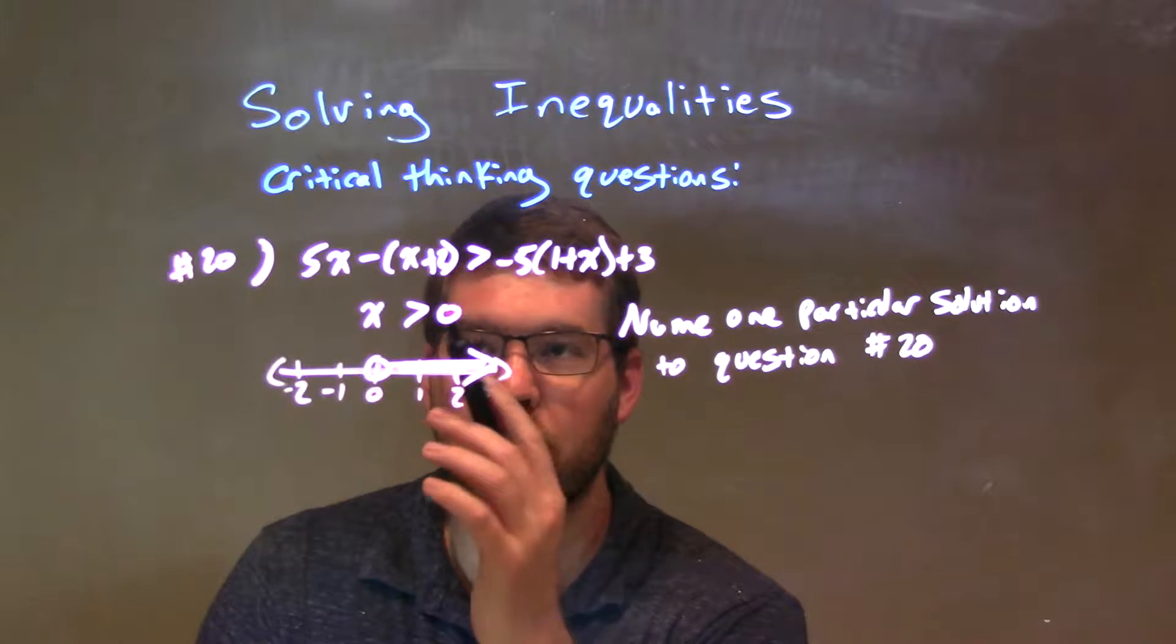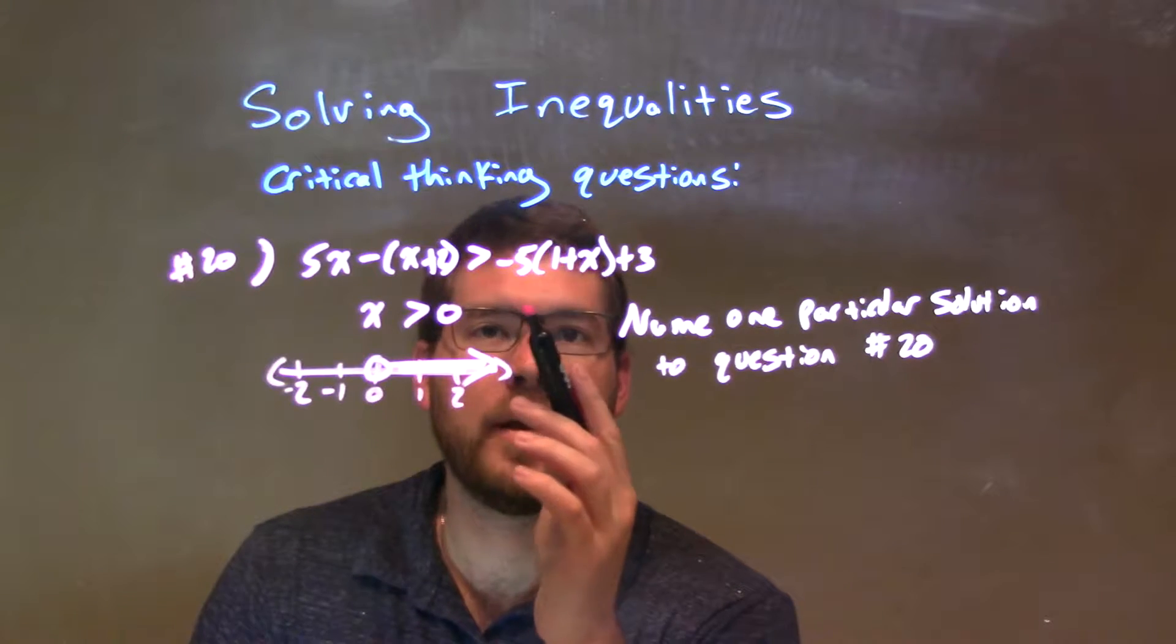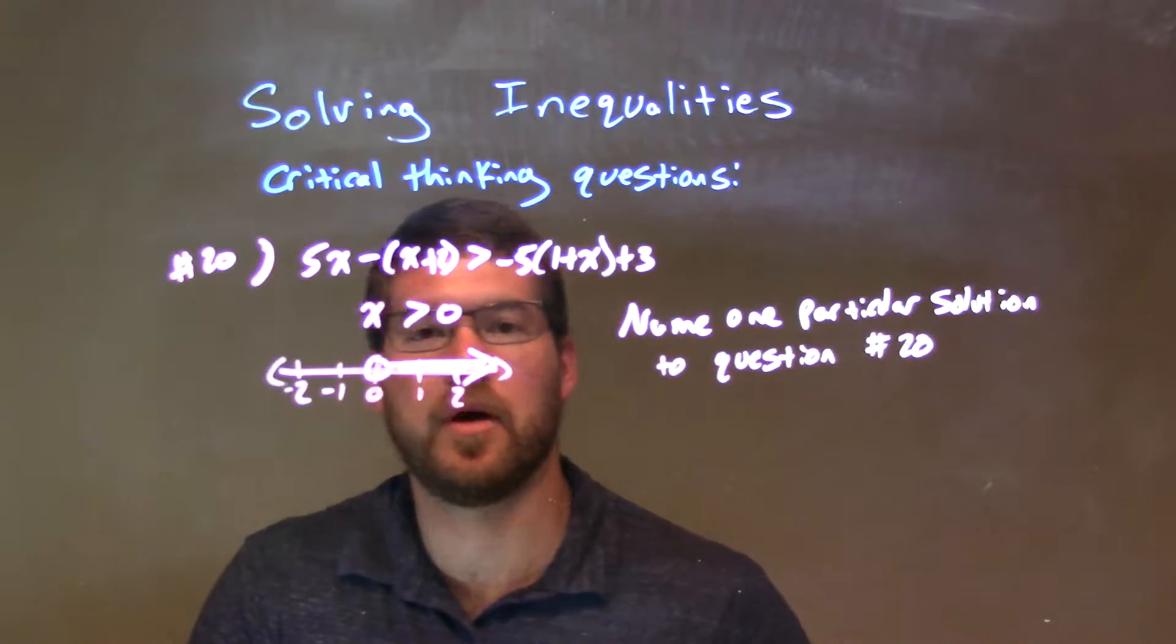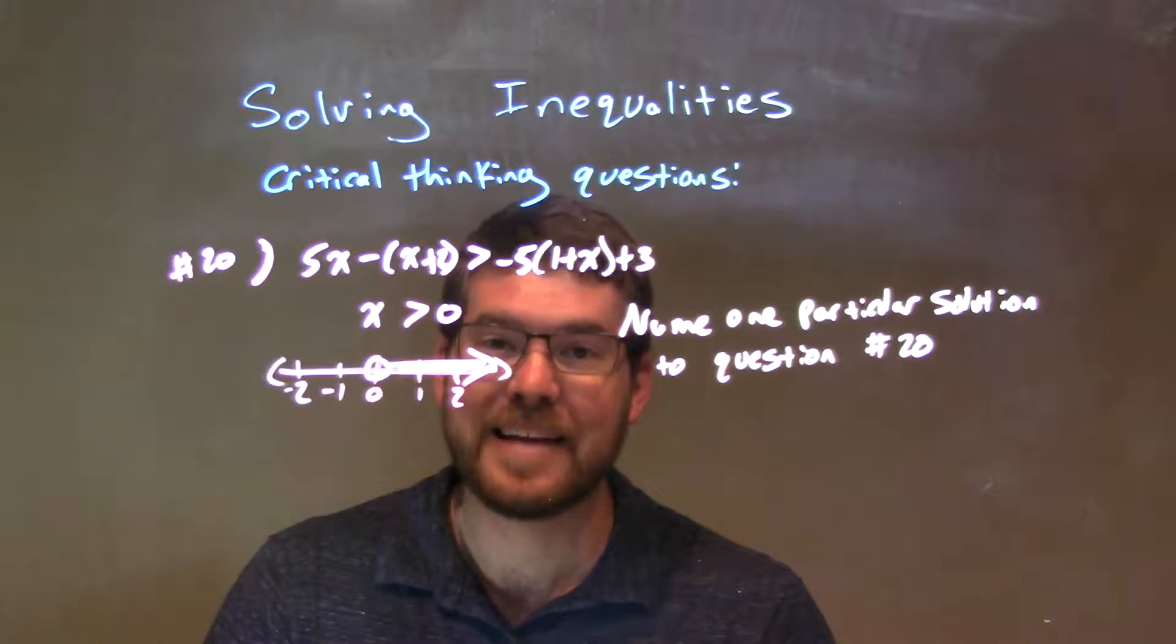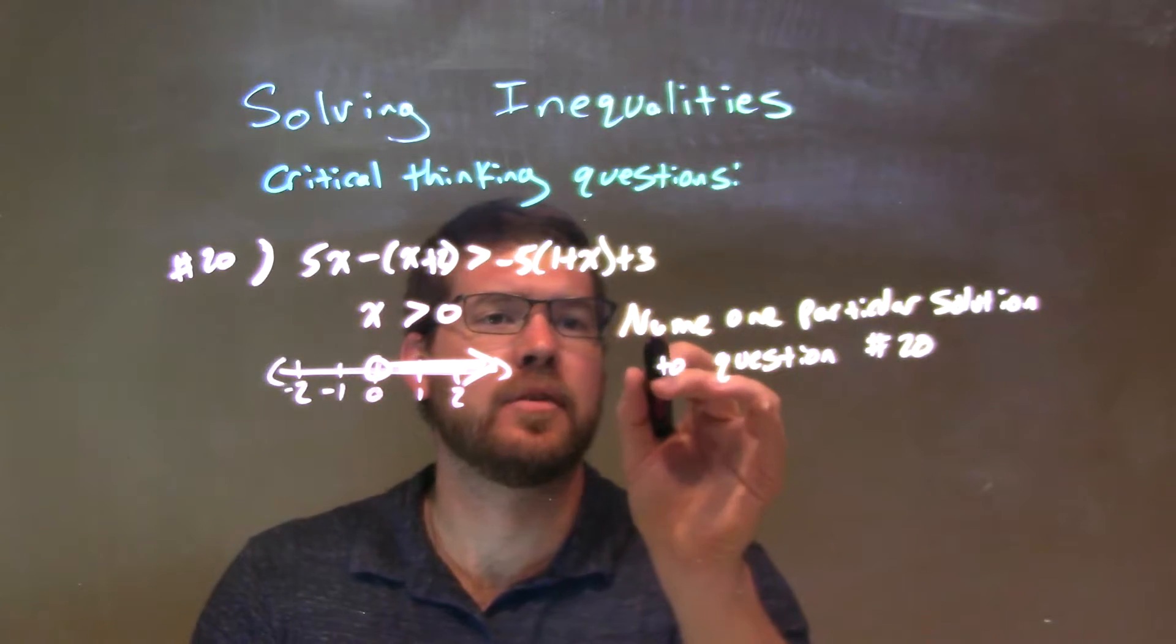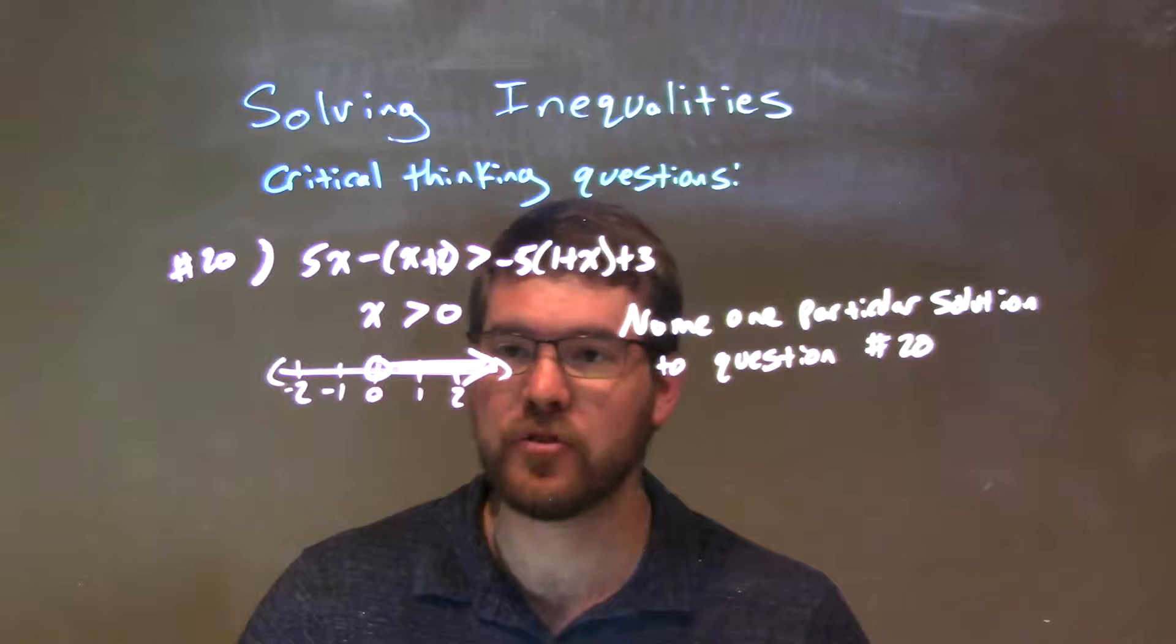5x minus x plus 2 is greater than negative 5 times 1 plus x plus 3. That solution is x is greater than 0, and there's another video explaining that. We graphed right here, so they asked us to name one particular solution to this question.